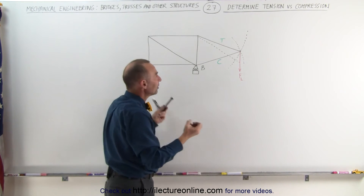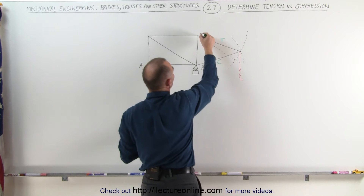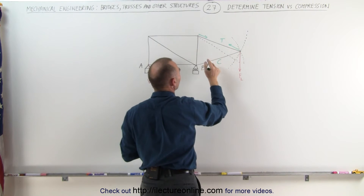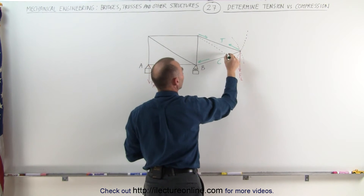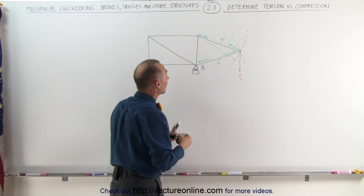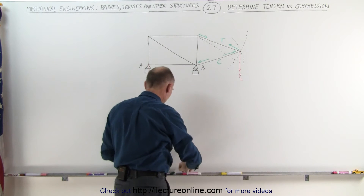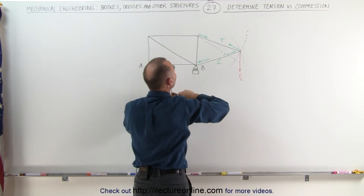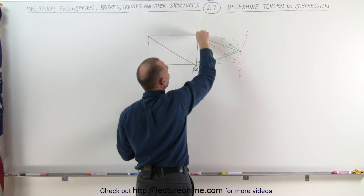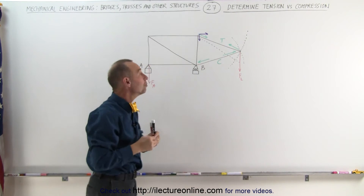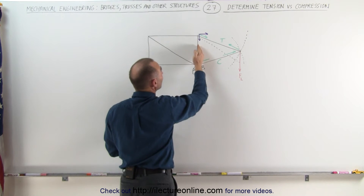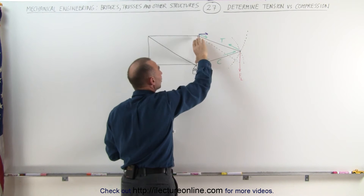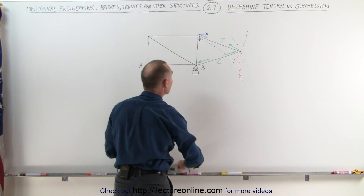Beams that are under tension pull on each side of the joint, which means there's a force in this direction and a force in this direction based upon this beam being under tension. If a beam is under compression, the force will act against the joint in both directions. If we take a look at this joint and subdivide the tension force on this member into x and y components, that means we have an x component in this direction and a y component in this direction. At this joint, this member must counteract this component of the tension forces, which means this beam is being compressed — therefore that beam is under compression.